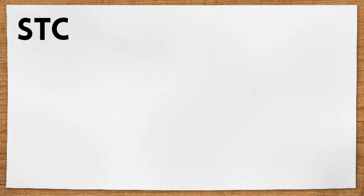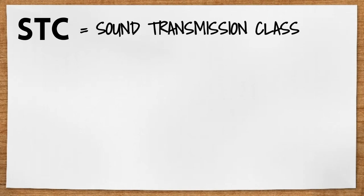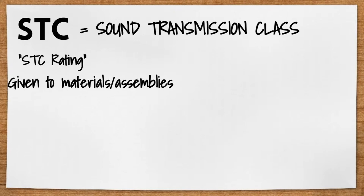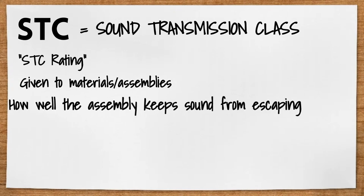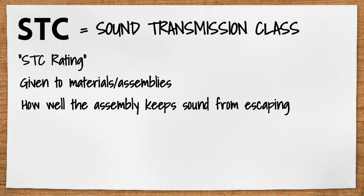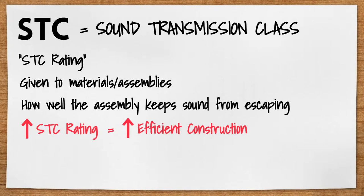STC stands for Sound Transmission Class. Materials and assemblies are often assigned an STC rating denoting how well the assembly keeps sound from escaping. The higher the STC rating, the more efficient the construction is, meaning it blocks the transmission of sound from one side of the assembly to the other.